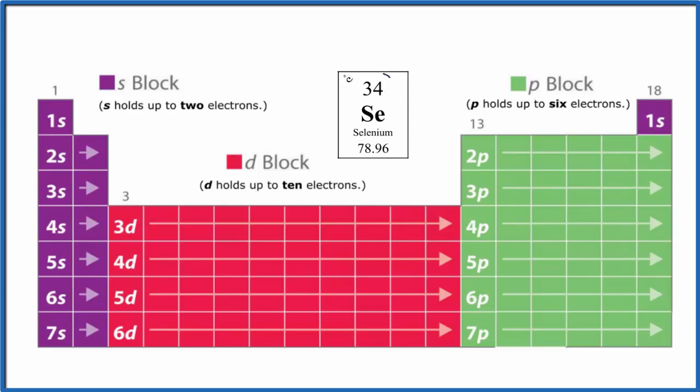So selenium has 34 protons. That's its atomic number. In protons, that equals the number of electrons for neutral elements. Everything listed on the periodic table is listed as neutral. So we have 34 electrons, and selenium is right here.